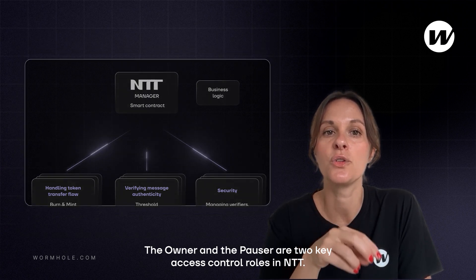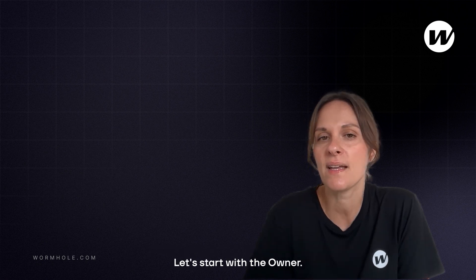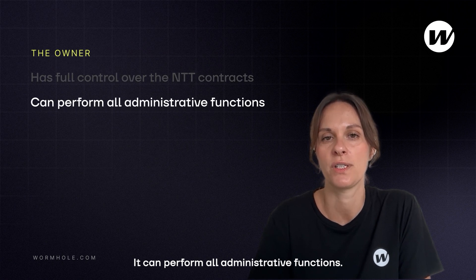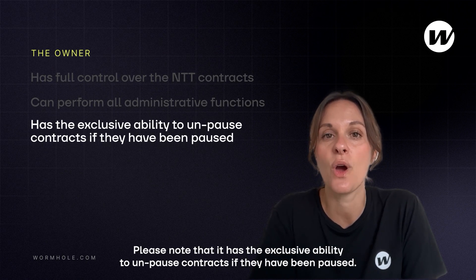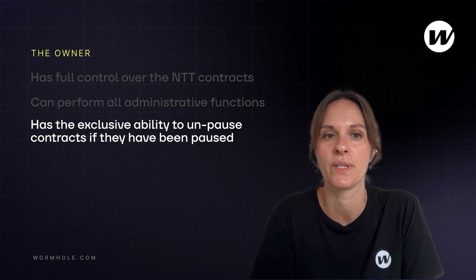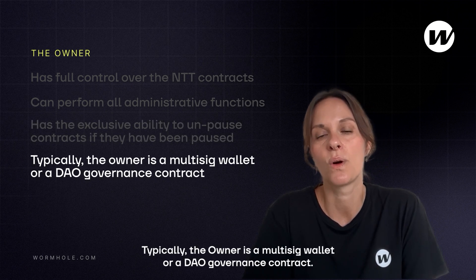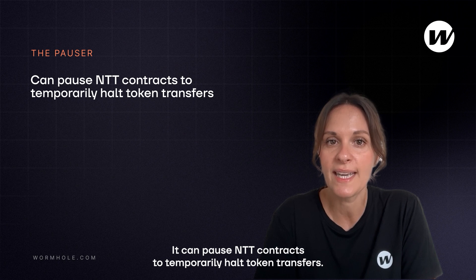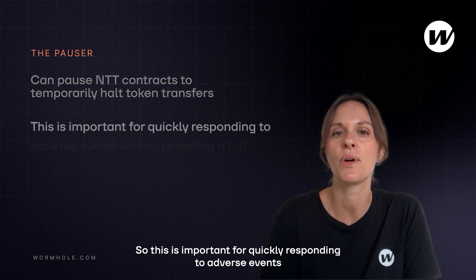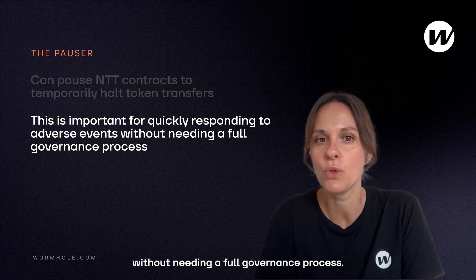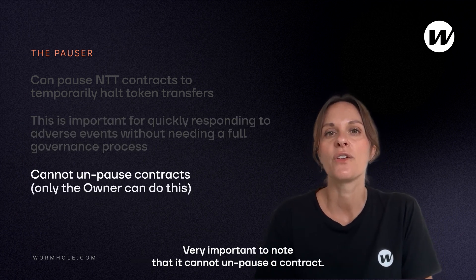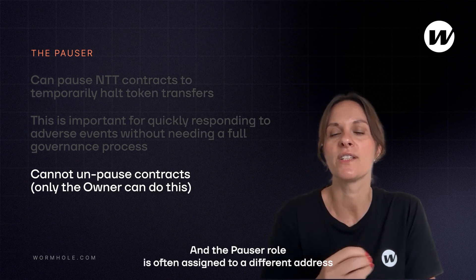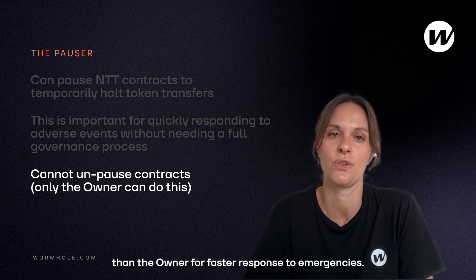The owner and the pauser are two key access control roles in NTT. The owner has full control over the NTT contract and can perform all administrative functions. Please note it has the exclusive ability to unpause contracts if they have been paused. Typically, the owner is a multisig wallet or a DAO governance contract. The pauser can pause NTT contracts to temporarily halt token transfers — this is important for quickly responding to adverse events without needing a full governance process. Very importantly, the pauser cannot unpause contracts; only the owner can do that. The pauser role is often assigned to a different address than the owner for faster response to emergencies.